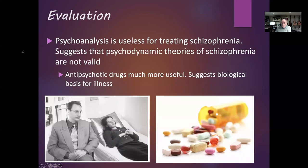Looking back at our biological explanation, positive symptoms of schizophrenia are caused by too much dopamine. That theory produced anti-psychotic drugs designed to reduce dopamine in the schizophrenic's brain. Because those drugs work, it suggests the theory is good — if changing dopamine levels reduces symptoms, that supports the biological theory. Psychoanalysis, the psychodynamic treatment, doesn't really work on people with schizophrenia, which suggests the psychodynamic theory isn't a valid explanation.